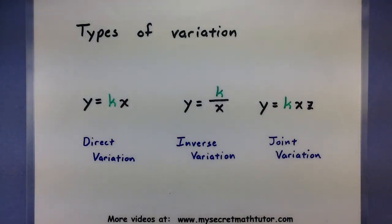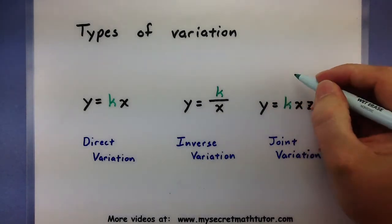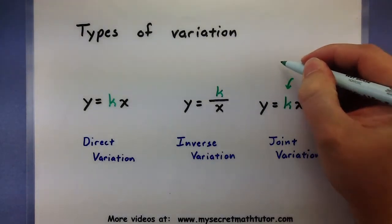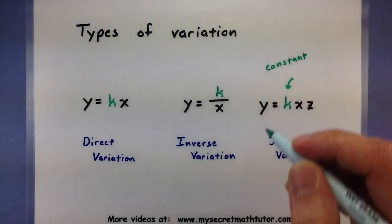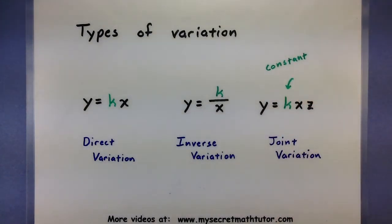Now here are all of their formulas, and I've really highlighted the k in all of these. This k is known as the constant of proportionality, and its job is to really figure out how the two things are connected. But again, let's cover these one at a time so you can see exactly how all of them work.